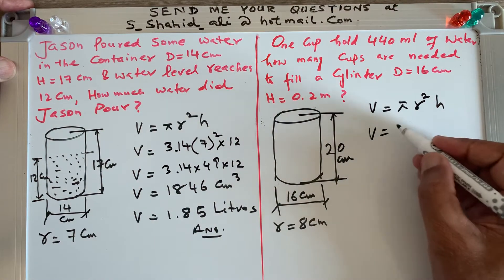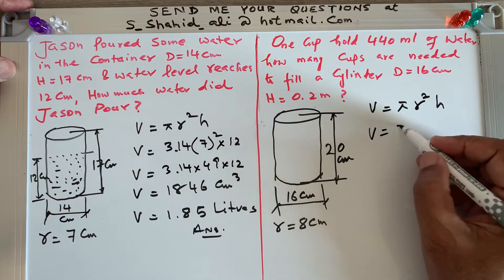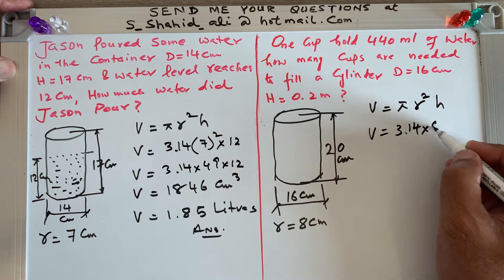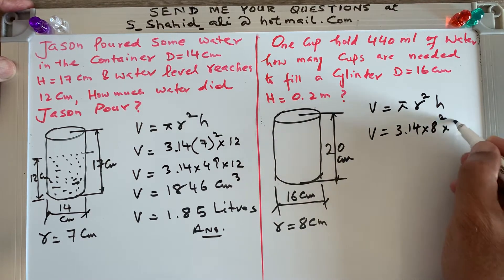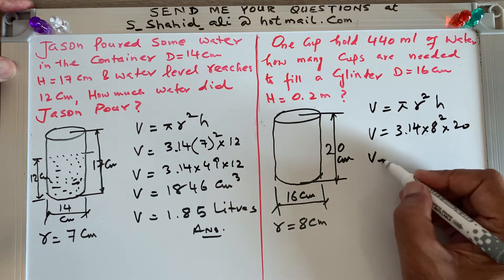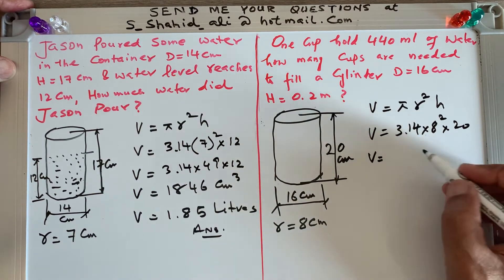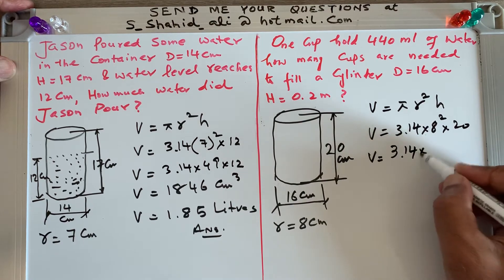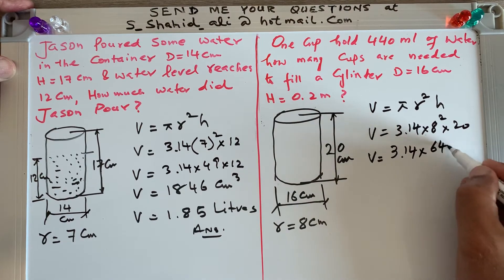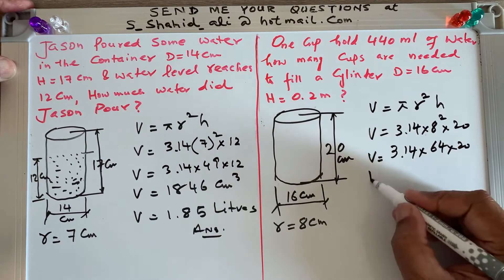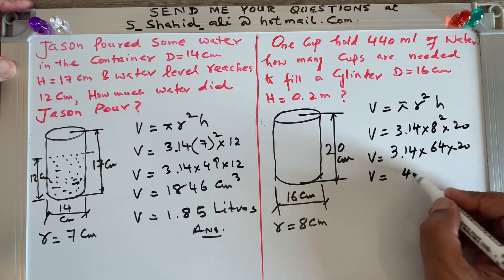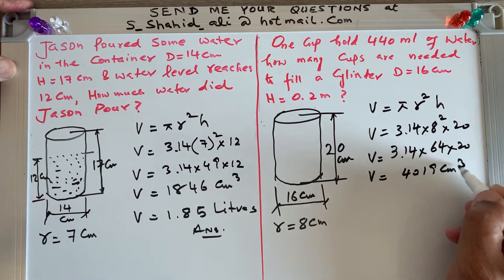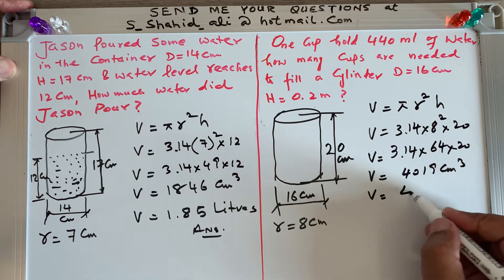We find the volume: 3.14 times r², which is 8², times h, which is 20. So V = 3.14 × 64 × 20, which gives 4019 centimeters cubed. In terms of liters, that is approximately 4 liters.